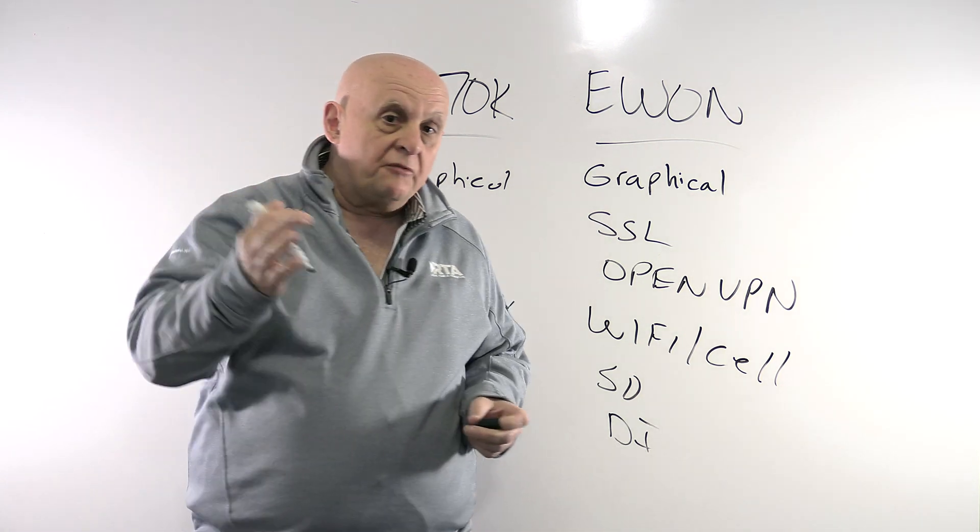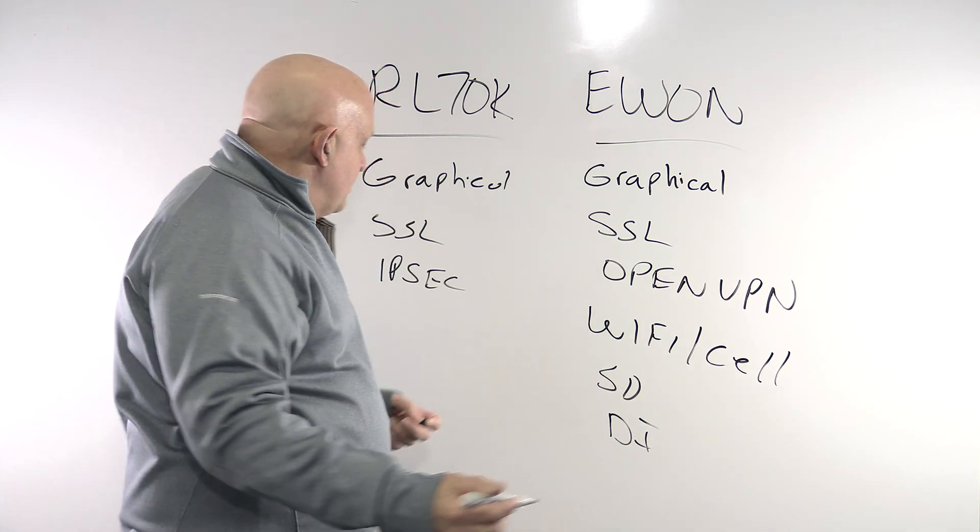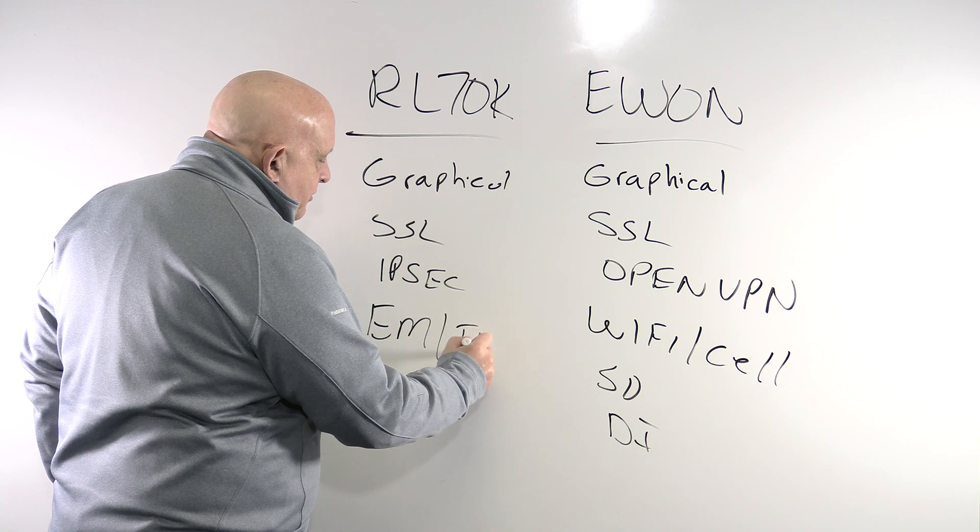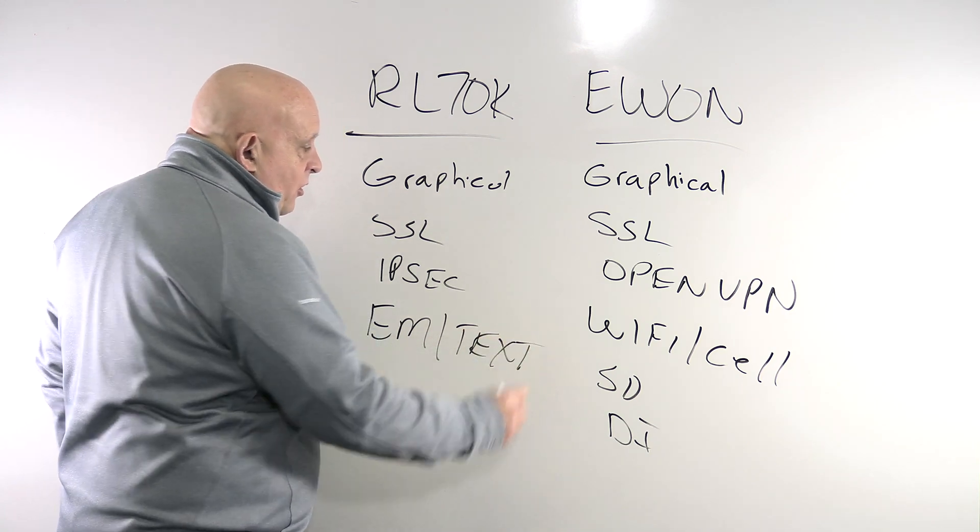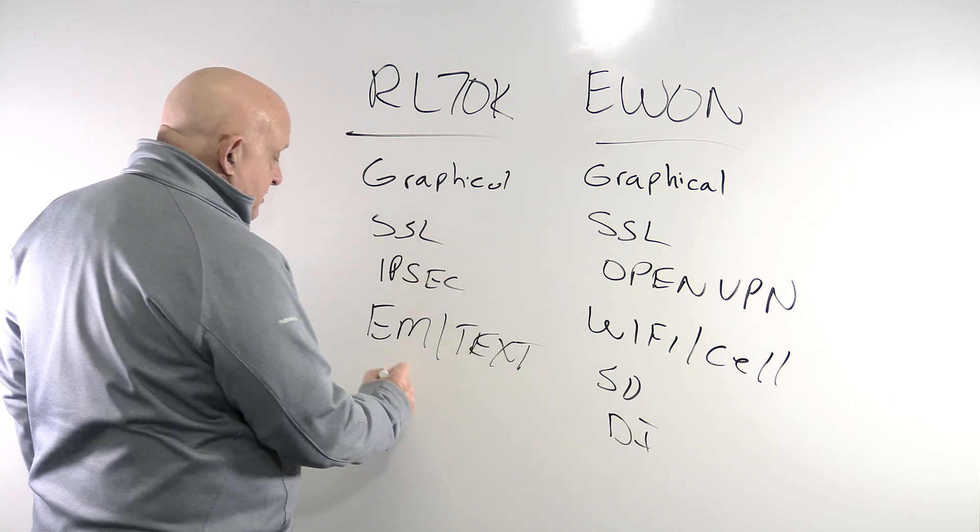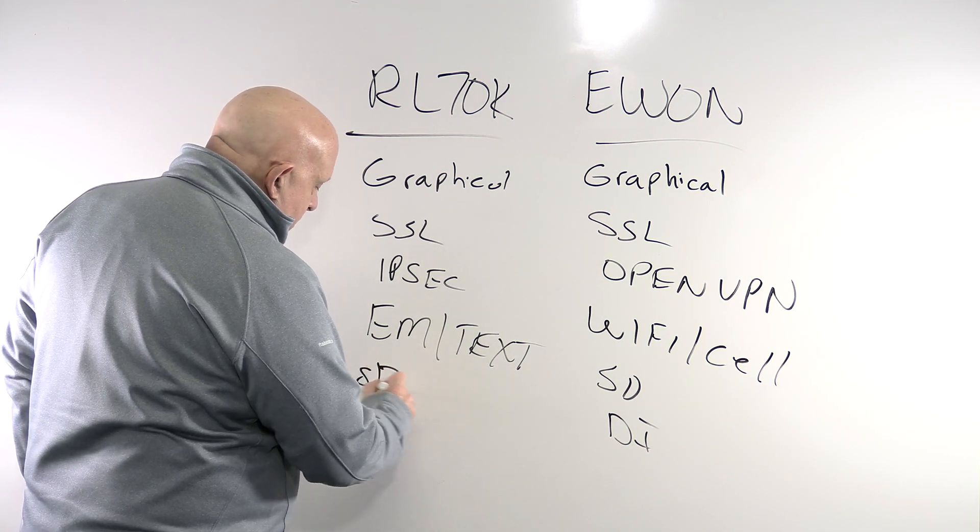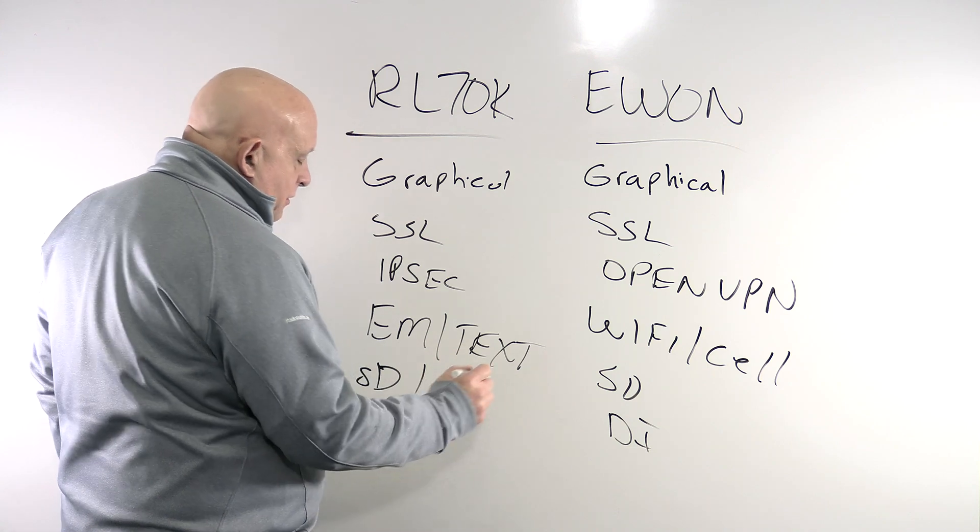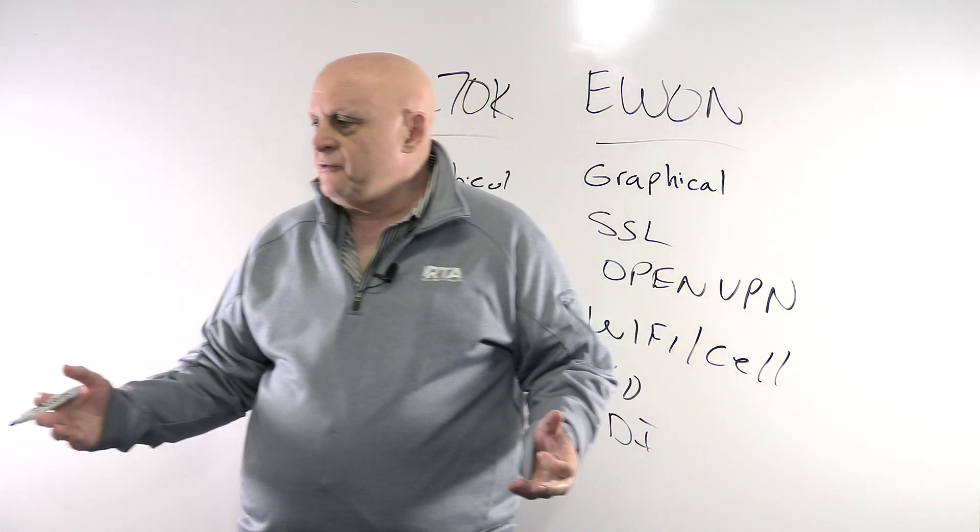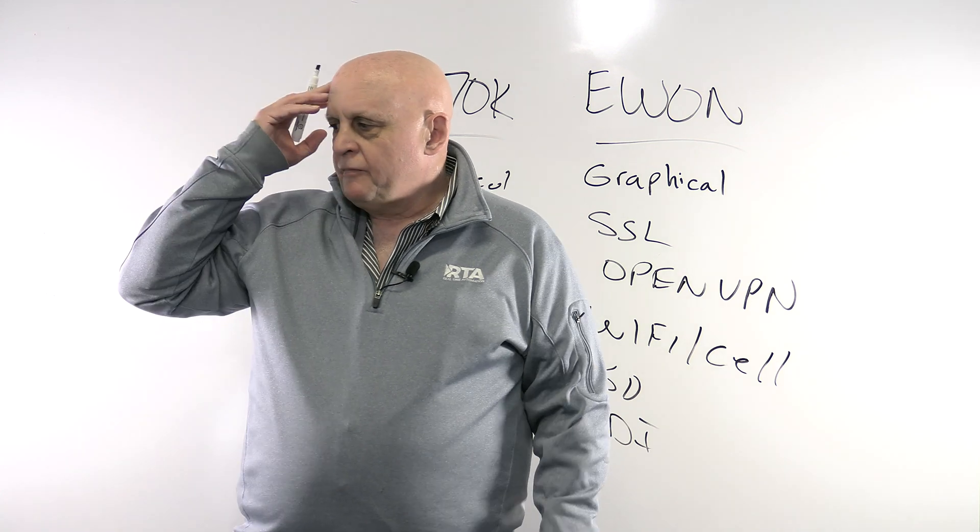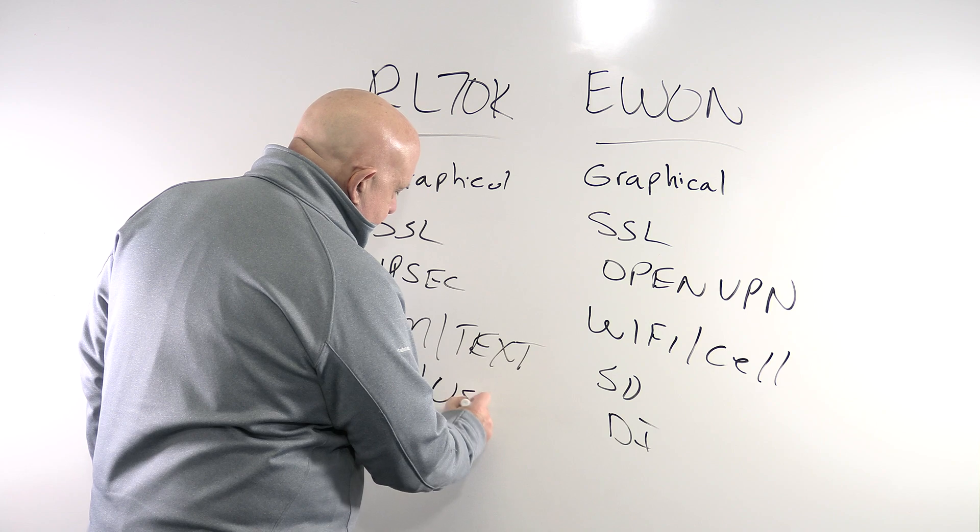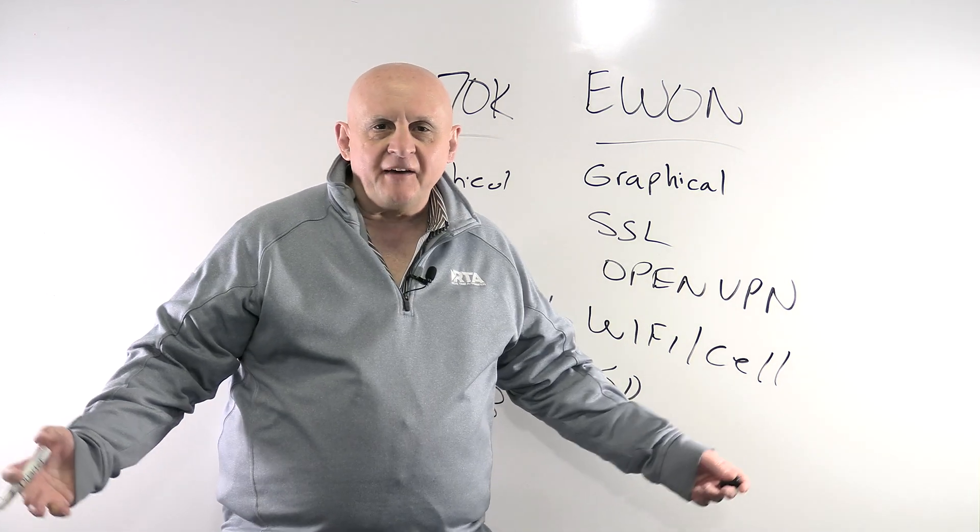It has a couple of really nice additional features that the E1 doesn't have. It's got email and text, so it can send out communications to let you know when stuff's going wrong. It's got not only just the SD card, it's got USB.